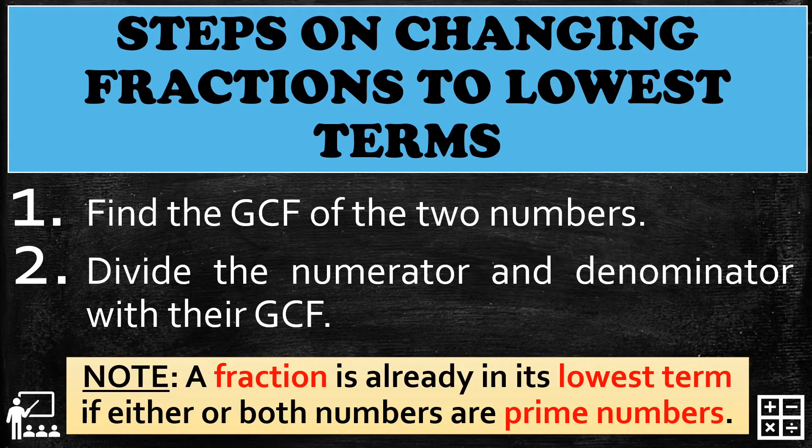Take note: if a fraction is already in its lowest terms, either or both numbers are prime numbers. Prime numbers are numbers that have only two factors.